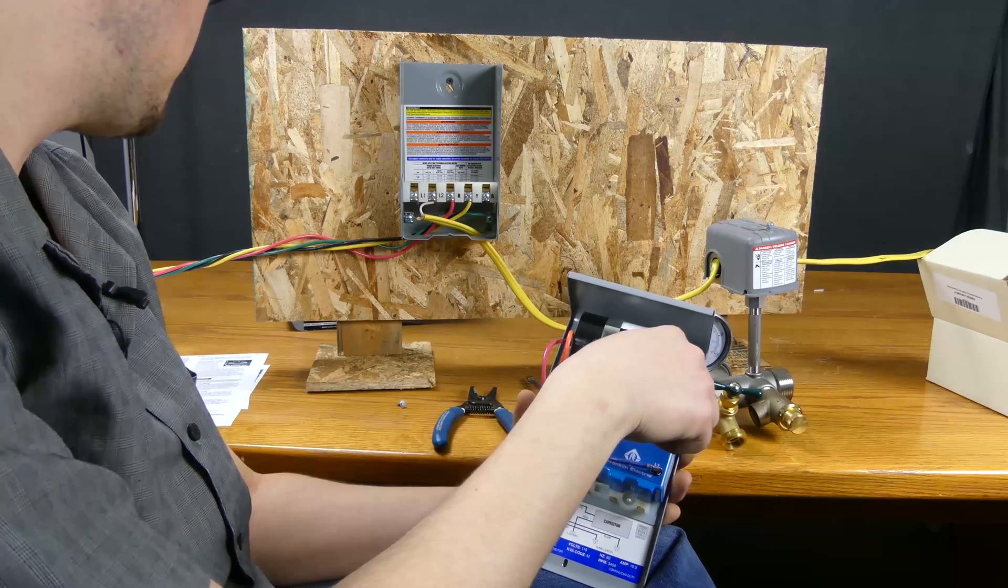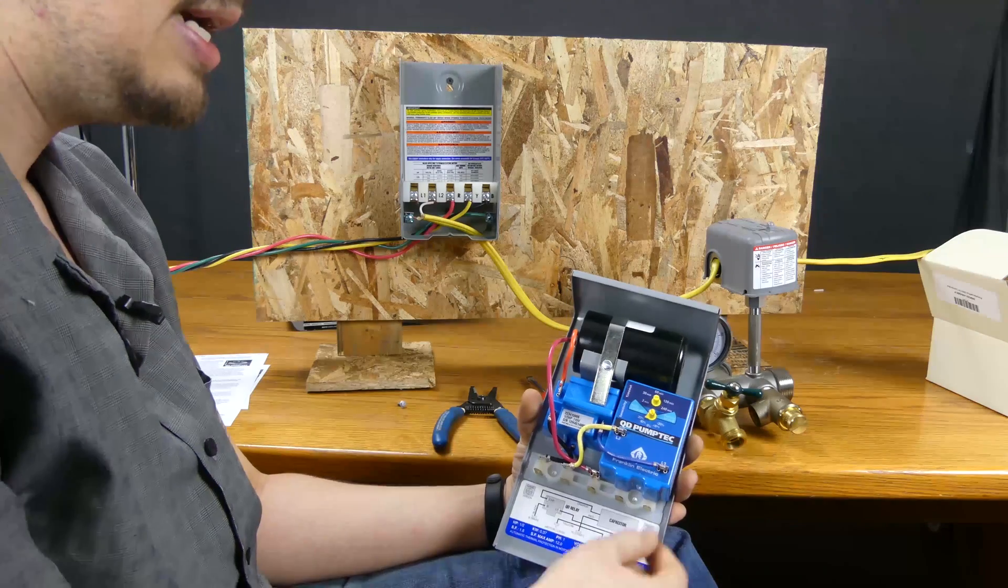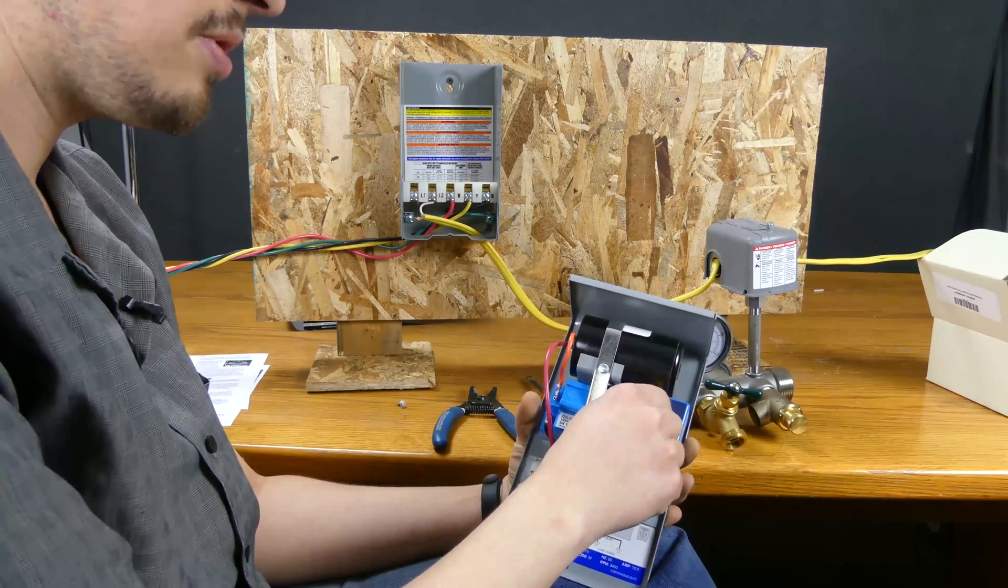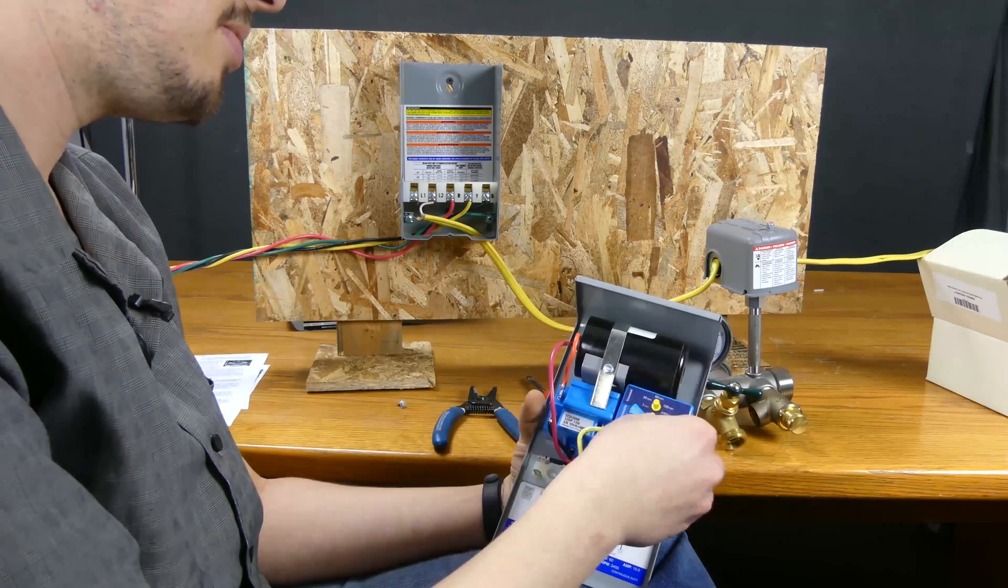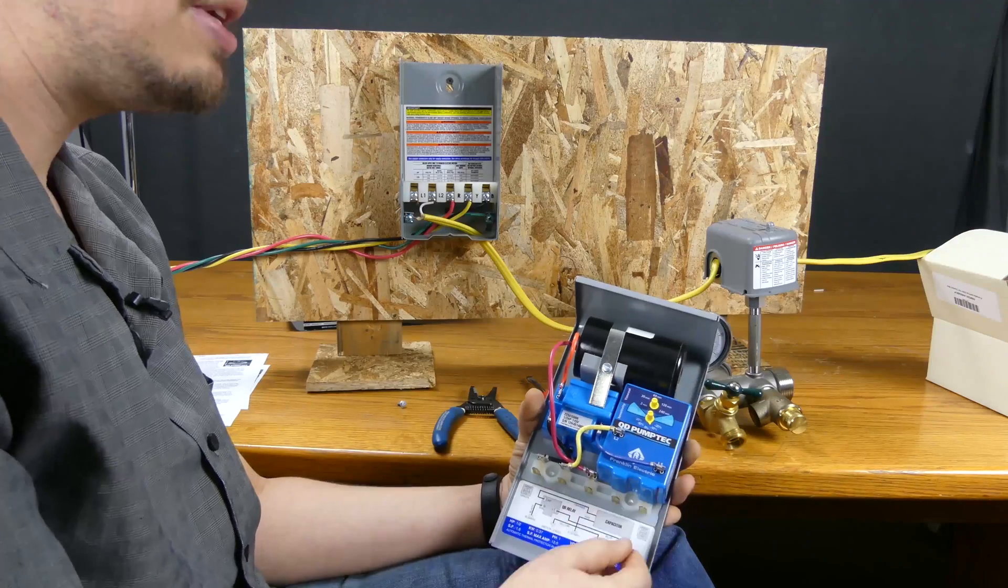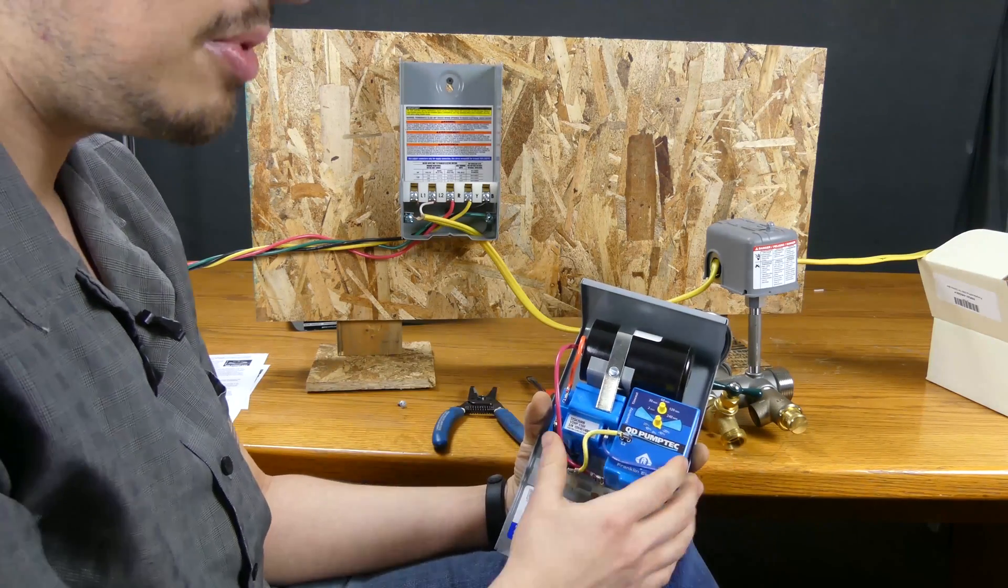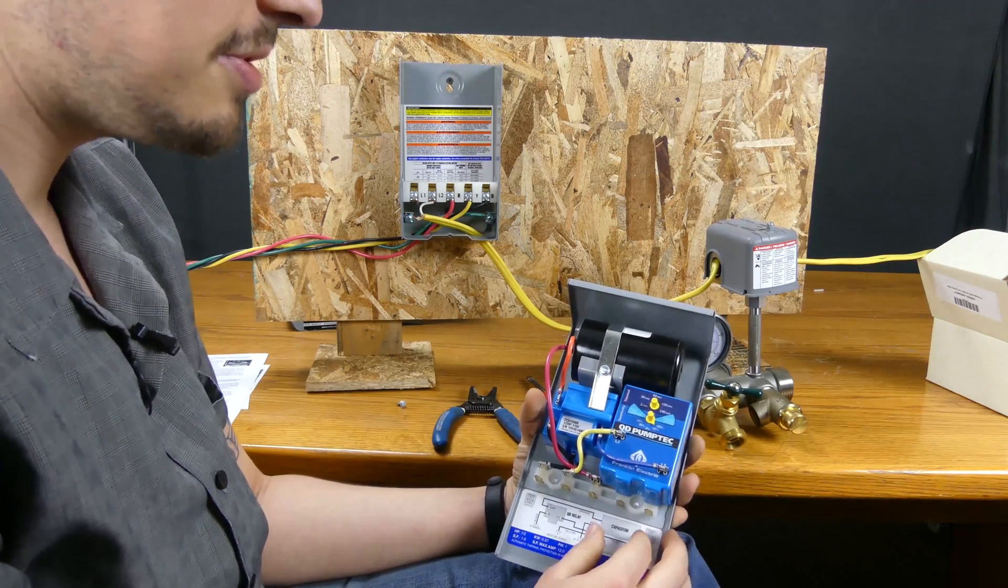If you're in a shallow well scenario, you could reduce it to let's say 70 percent or 60 percent if it falls below. Or in a deeper well scenario you may want to increase the sensitivity because the load on the motor is much higher, so it's going to take a higher degree of sensitivity to identify an issue.